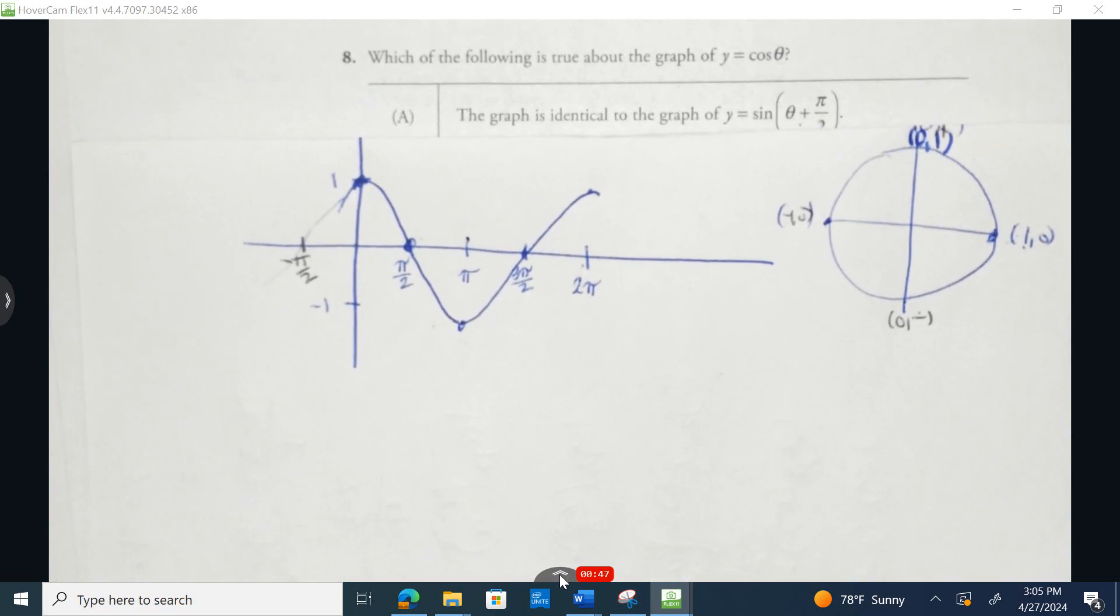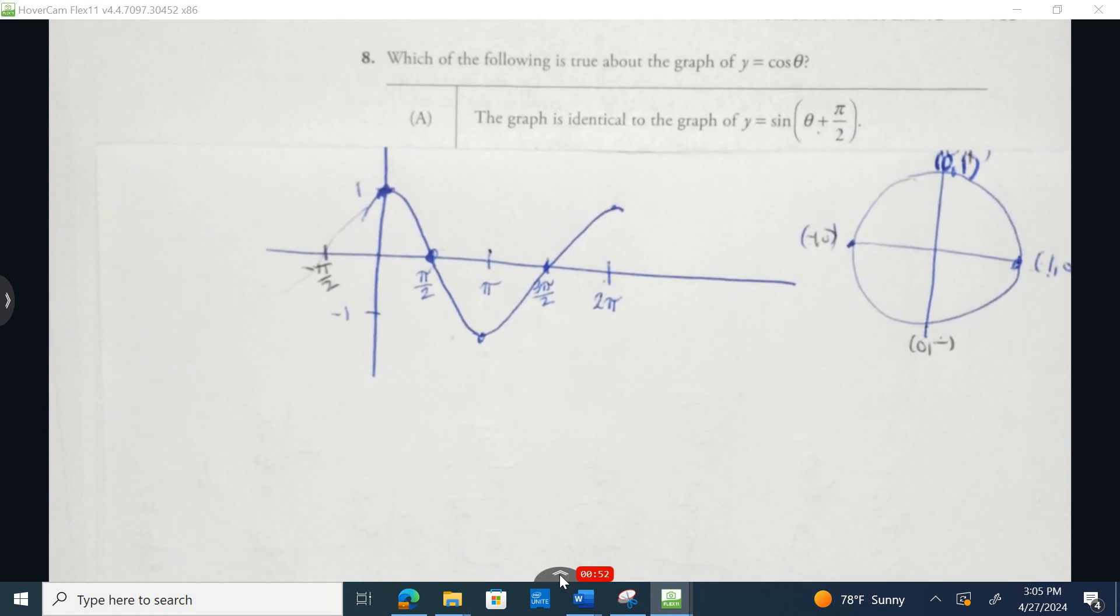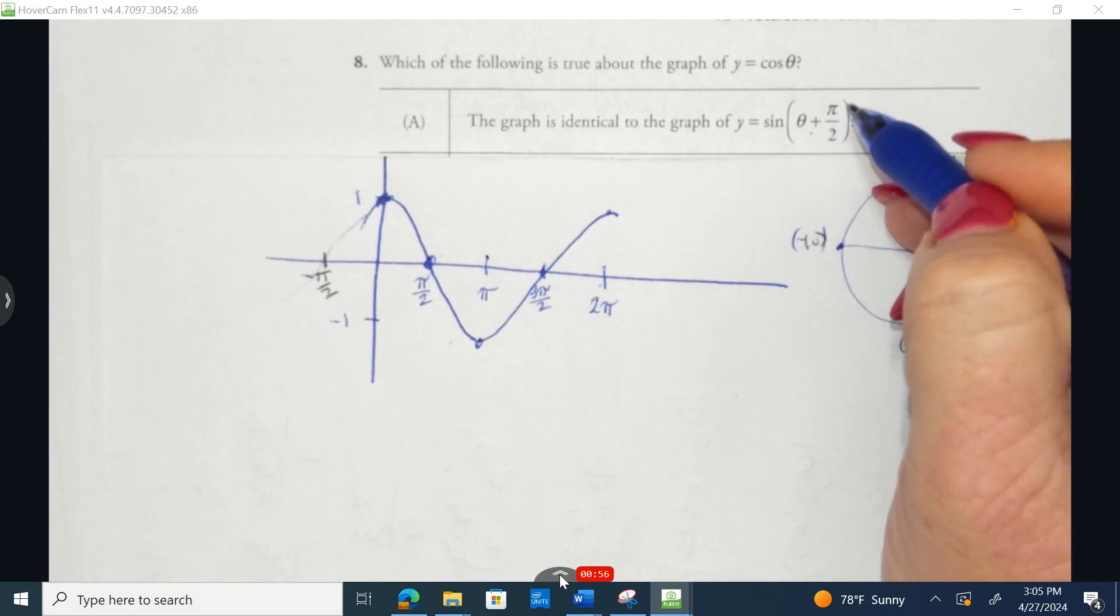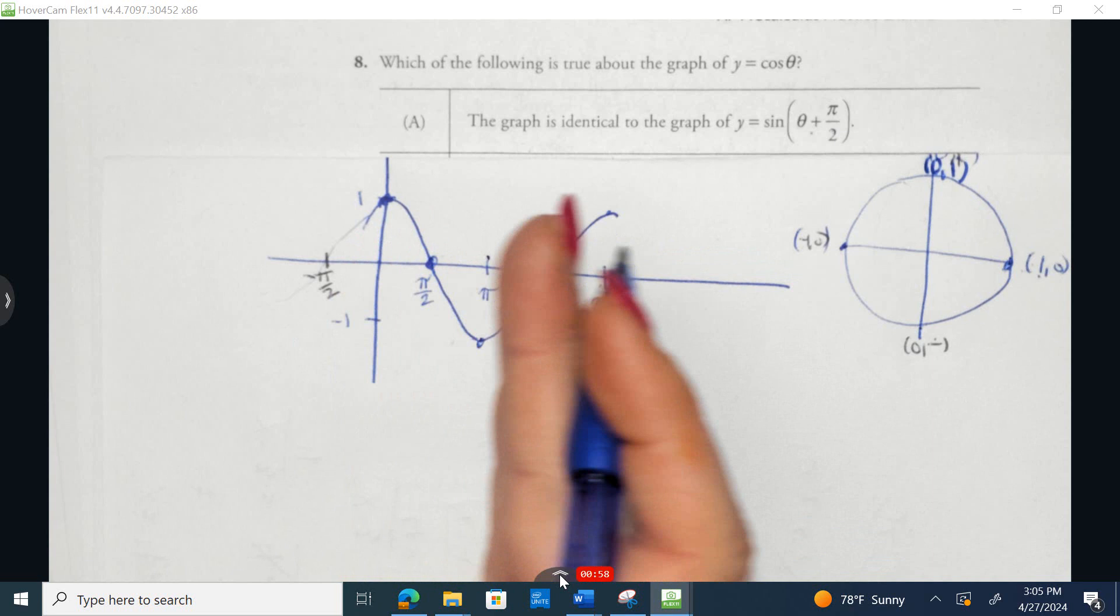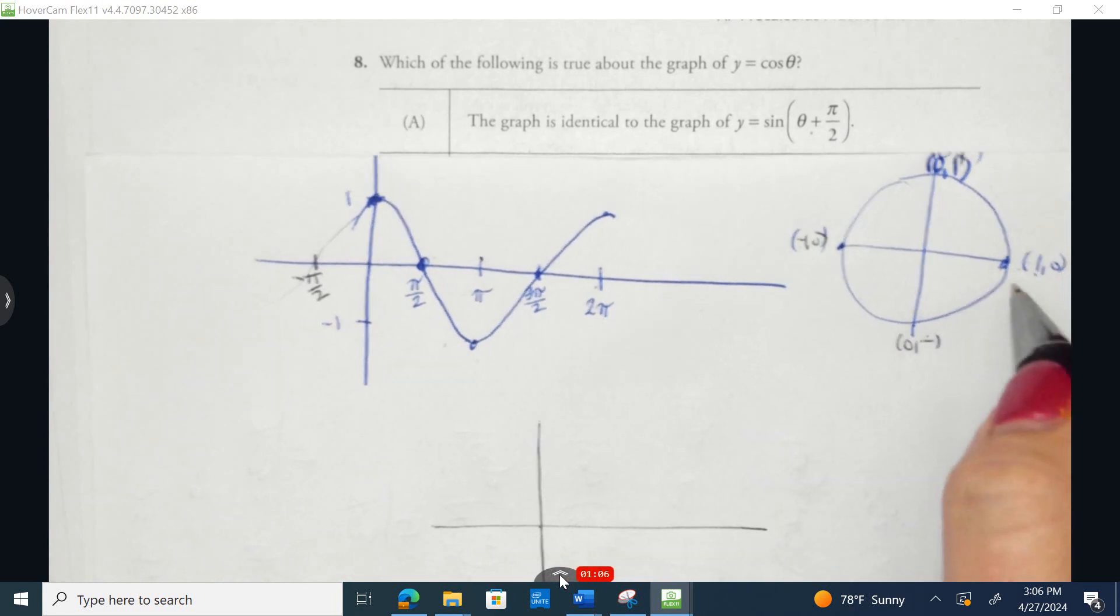The graph is identical to the graph of y equals the sine of theta plus pi over 2. Now as a quick reminder, remember we're always going the opposite of what we think. So instead of taking a normal sine curve and shifting it to the right pi over 2, we're going to shift it to the left pi over 2. So let's just first think of what does a normal sine curve look like. A normal sine curve, let's do the exact same thing.